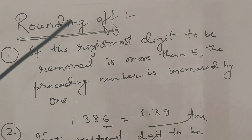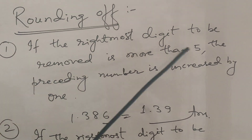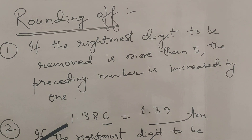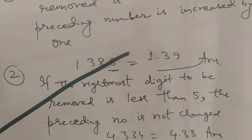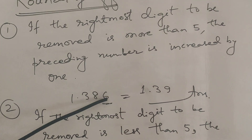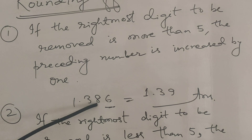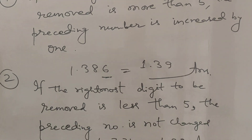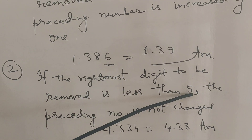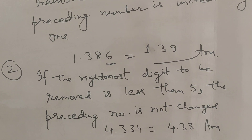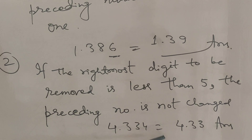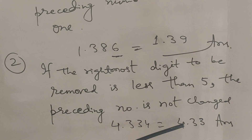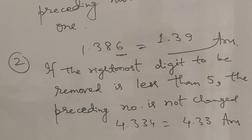Rules for rounding off: If the rightmost digit to be removed is more than 5, the preceding number is increased by 1. For example, 1.386 rounded to 3 significant figures gives 1.39 (since 6 > 5). If the rightmost digit to be removed is less than 5, the preceding number is unchanged. For example, 4.334 rounded gives 4.33 (since 4 < 5).